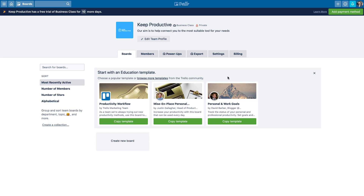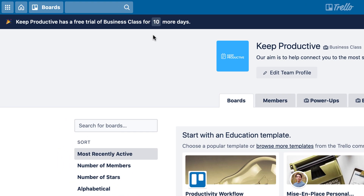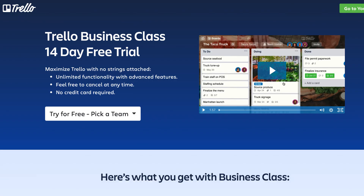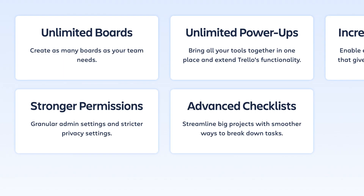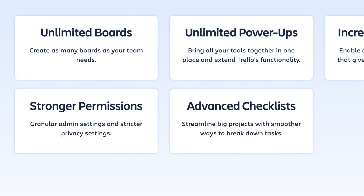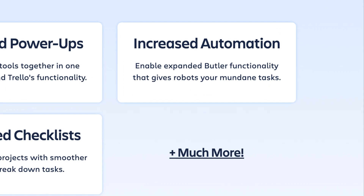I'm on Trello web edition and you can now get access to a free trial for the business class plan — they give you 14 days. Within the Trello business class plan, you get unlimited boards, unlimited power-ups, team board templates which allow you to create new templates using boards you've already created, Butler automations — Butler was an automated service or power-up inside of Trello that Trello purchased — and also collections to group boards, and this new feature, Advanced Checklists.